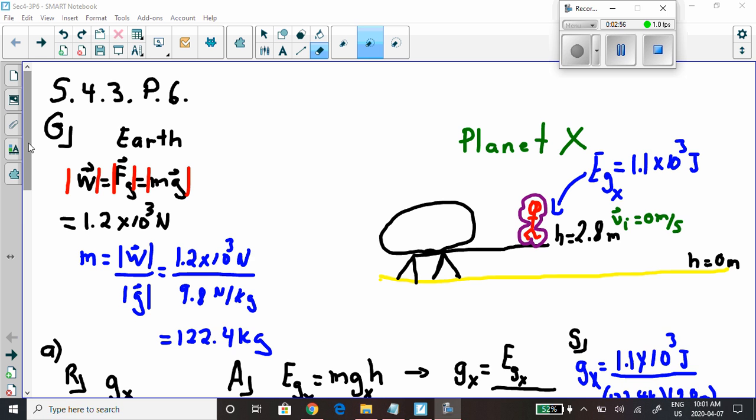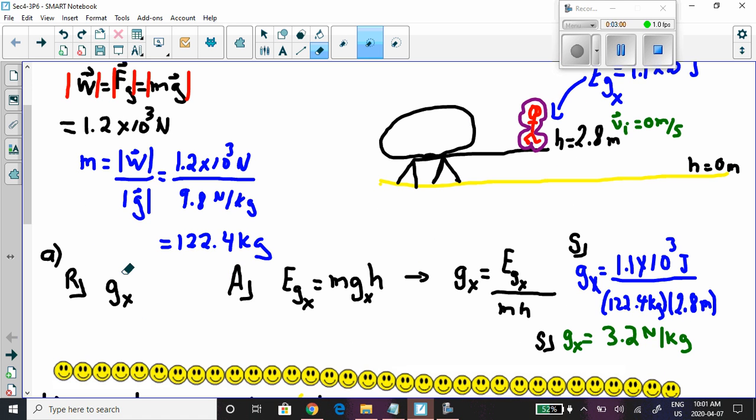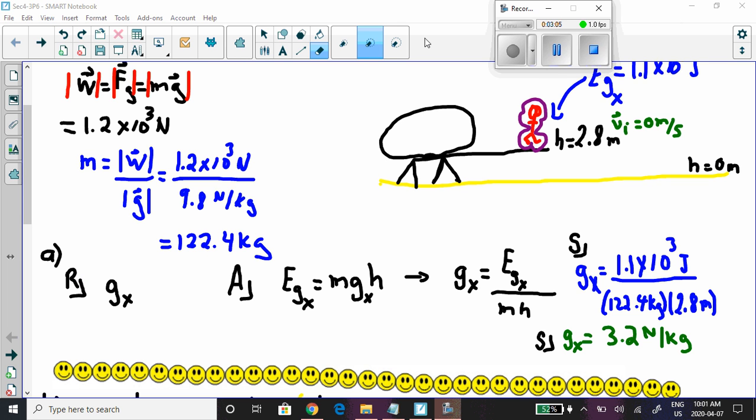So let me scroll down here to the first part. We're told that we want to calculate what the gravitational field strength is on Planet X. That's what we want to calculate right there. Well, since we're in the energy unit, we can use this equation, EG is equal to MGH.